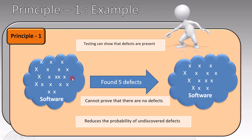So only 15 are left. We have reduced the number of defects that the customer can find. That was the first principle of testing: testing shows the presence of defects, not their absence.